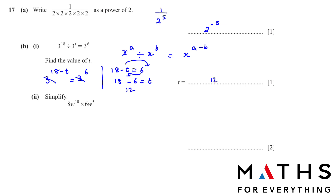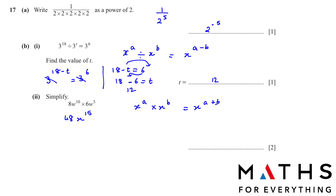The next part: simplify. First multiply 8 by 6 using the calculator. Using the exponential rule — when multiplying with the same base, add the powers — so 10 plus 5 equals 15. This brings us to the end of this tutorial. Please share and like the video. For question 18, please watch the next part. Thank you for watching.